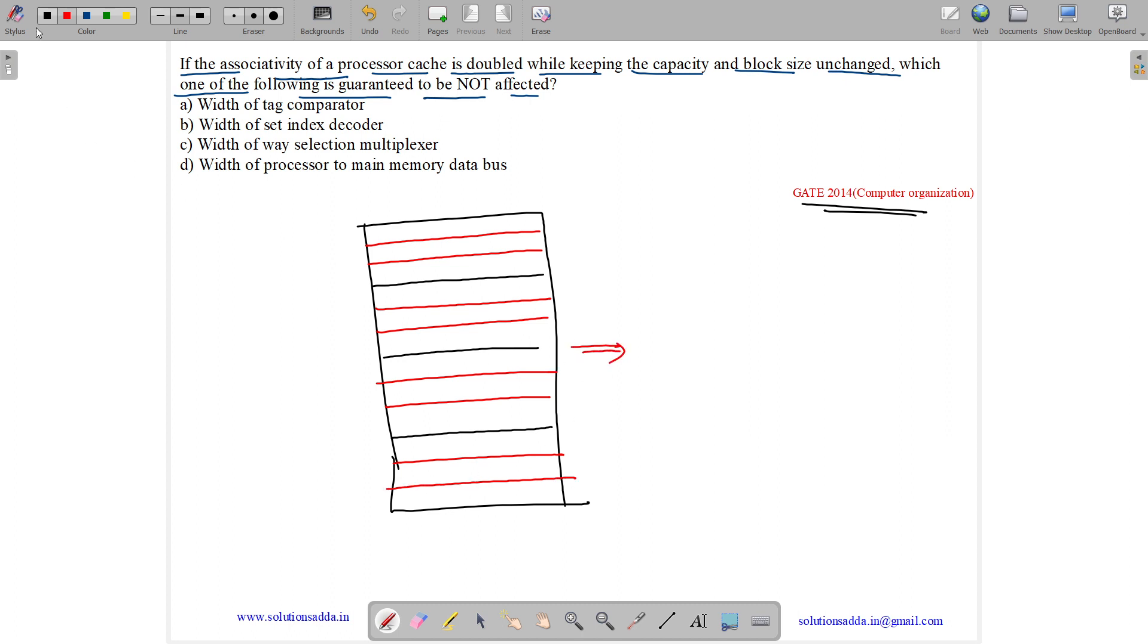Now our newer cache is doubled, the associativity is doubled. So it is six-way associative cache. So here we will have only two sets, because it is given that the size, block size and the capacity is the same. So number of sets will reduce.